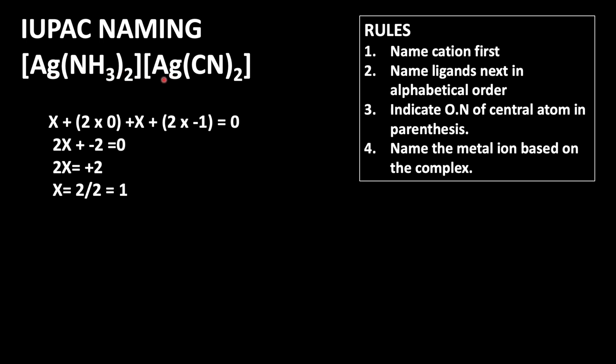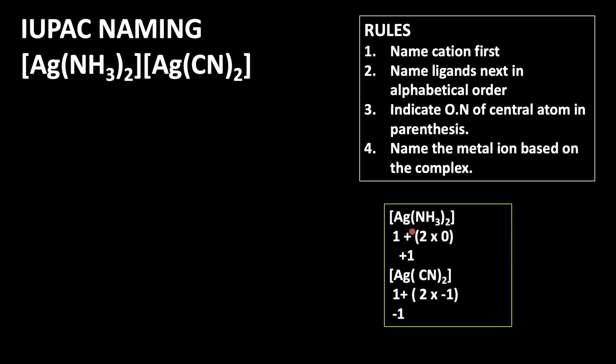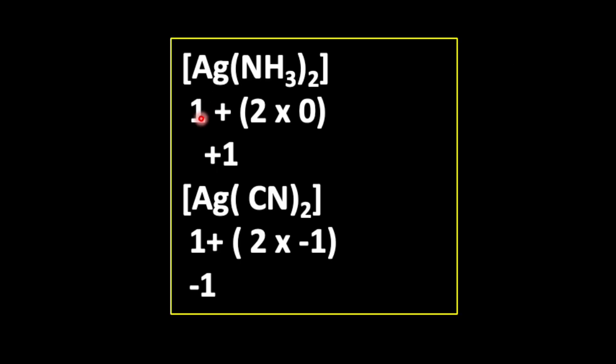Now we're going to find out the net charge carried by each complex entity. Then only we can find out which one is cationic or anionic. For [Ag(NH3)2], silver is in plus 1 oxidation state, NH3 is a neutral ligand, 2 times 0. So plus 1. It means it is a cationic complex.